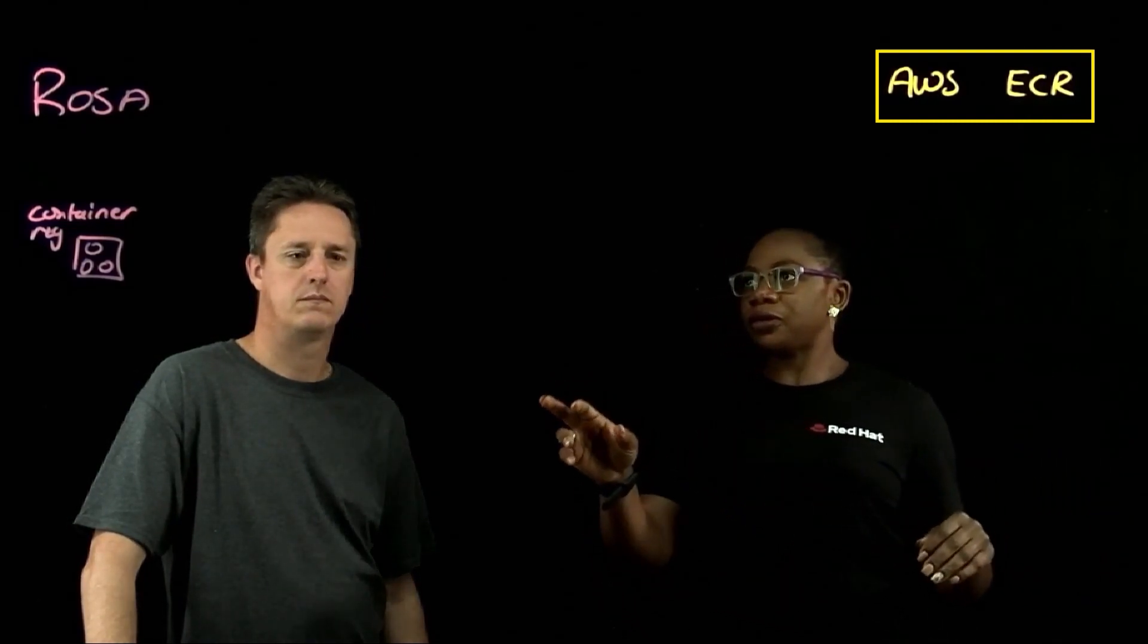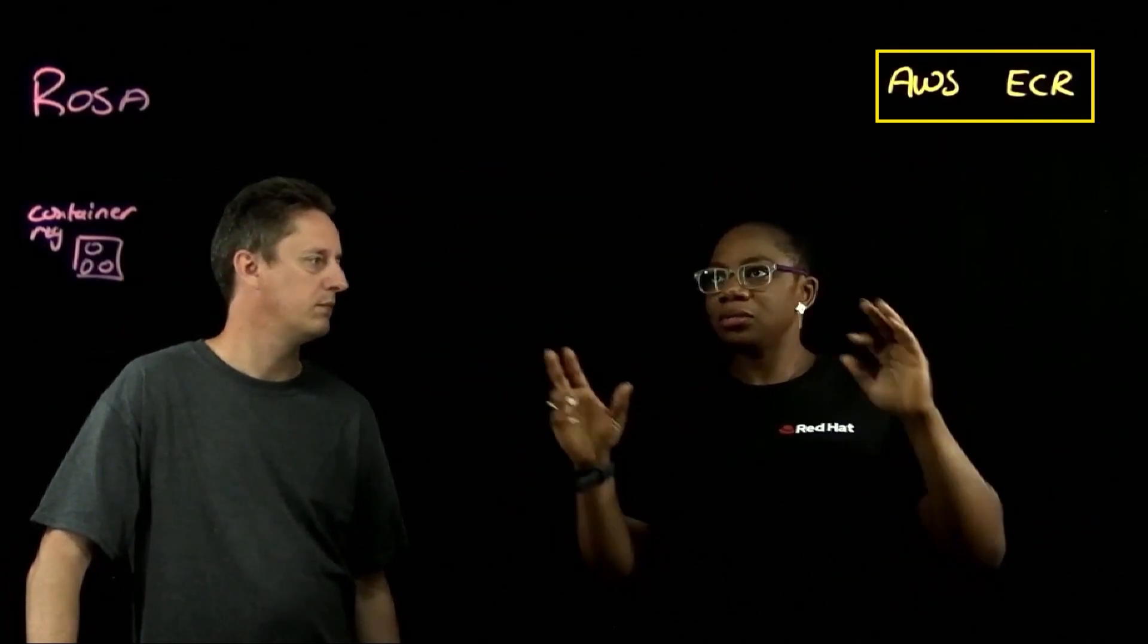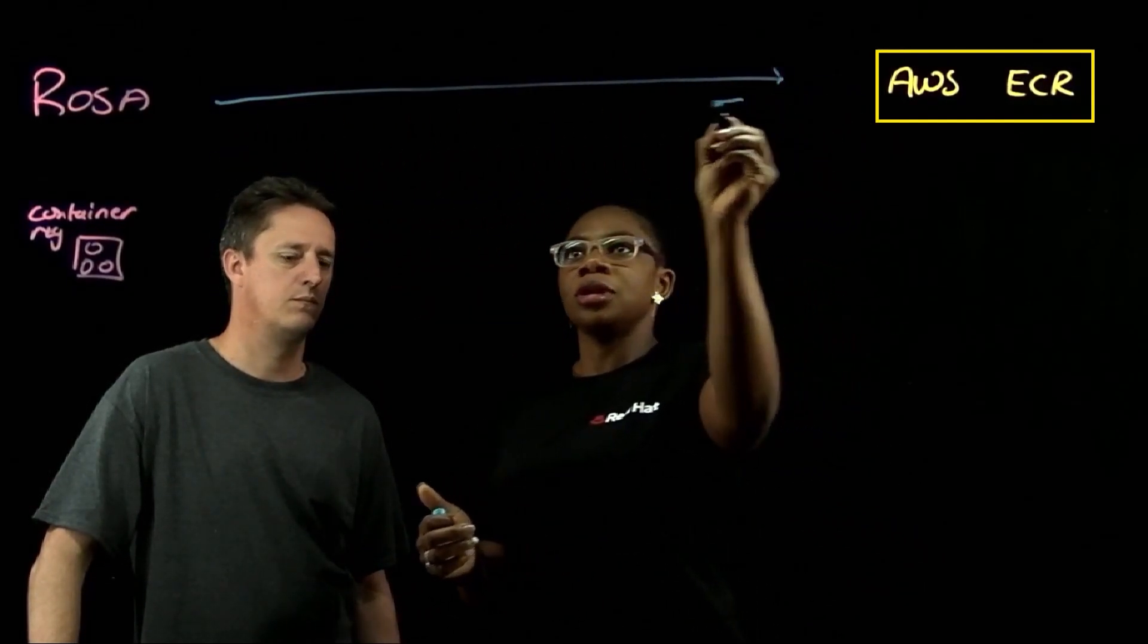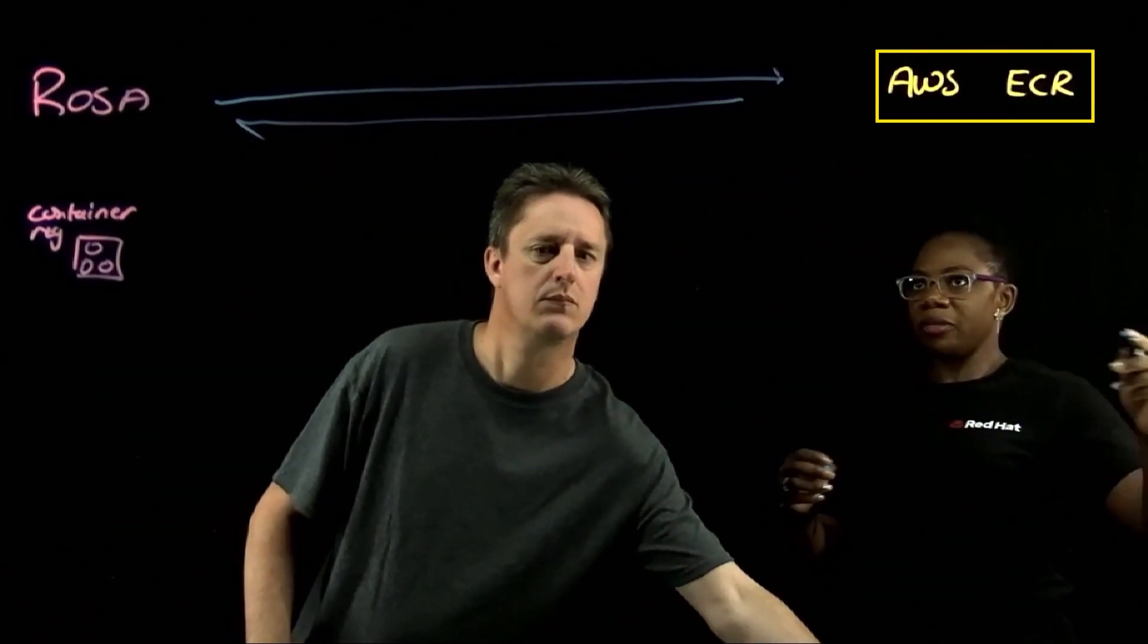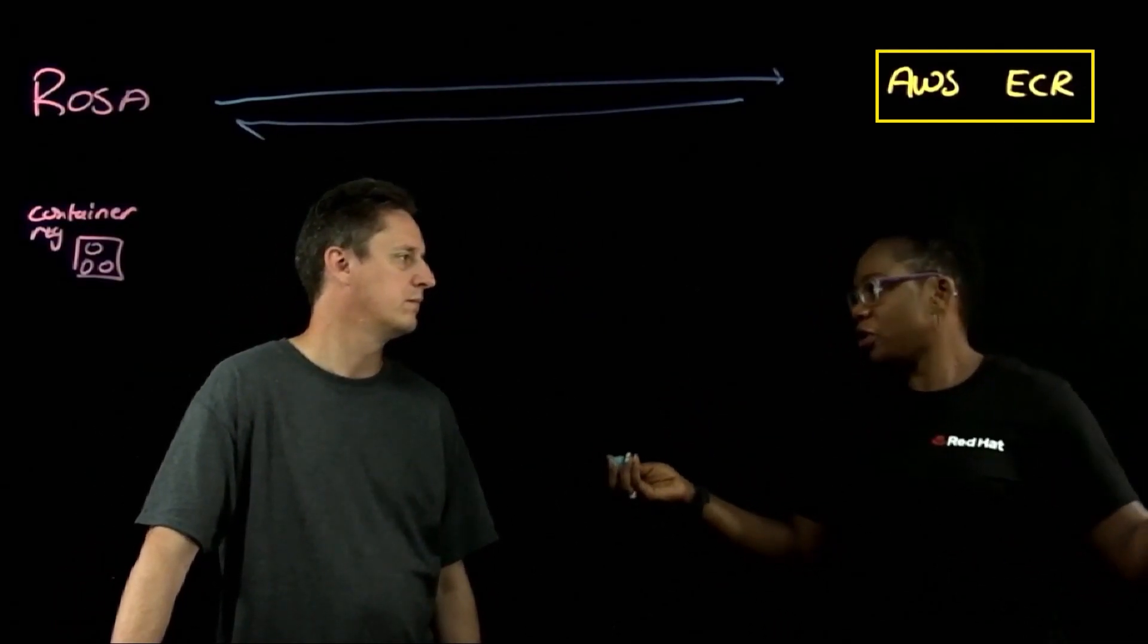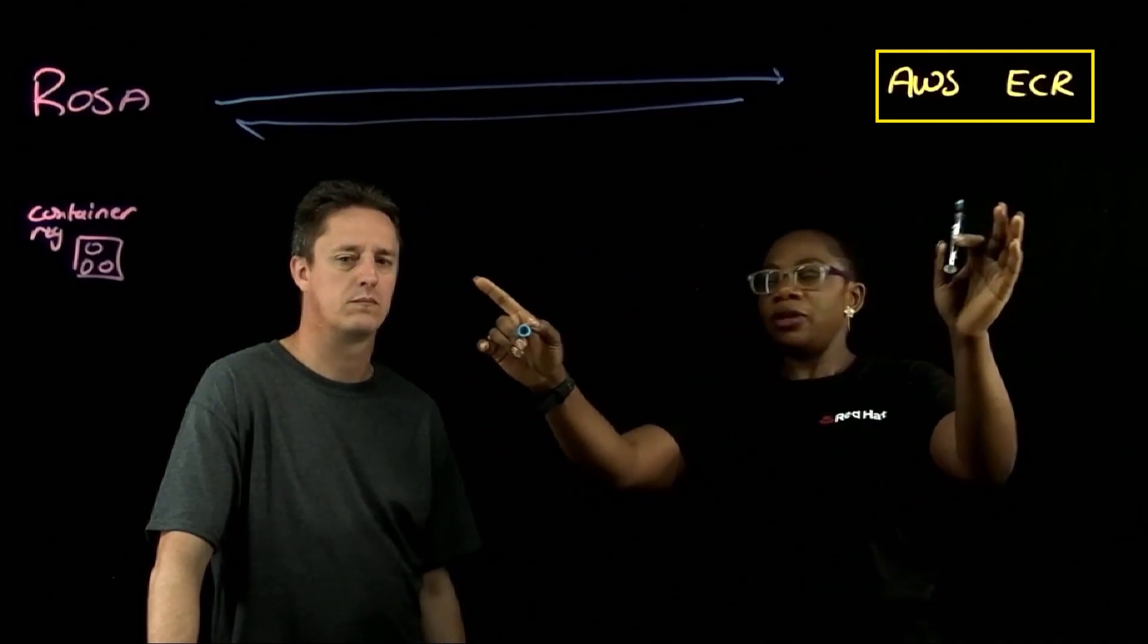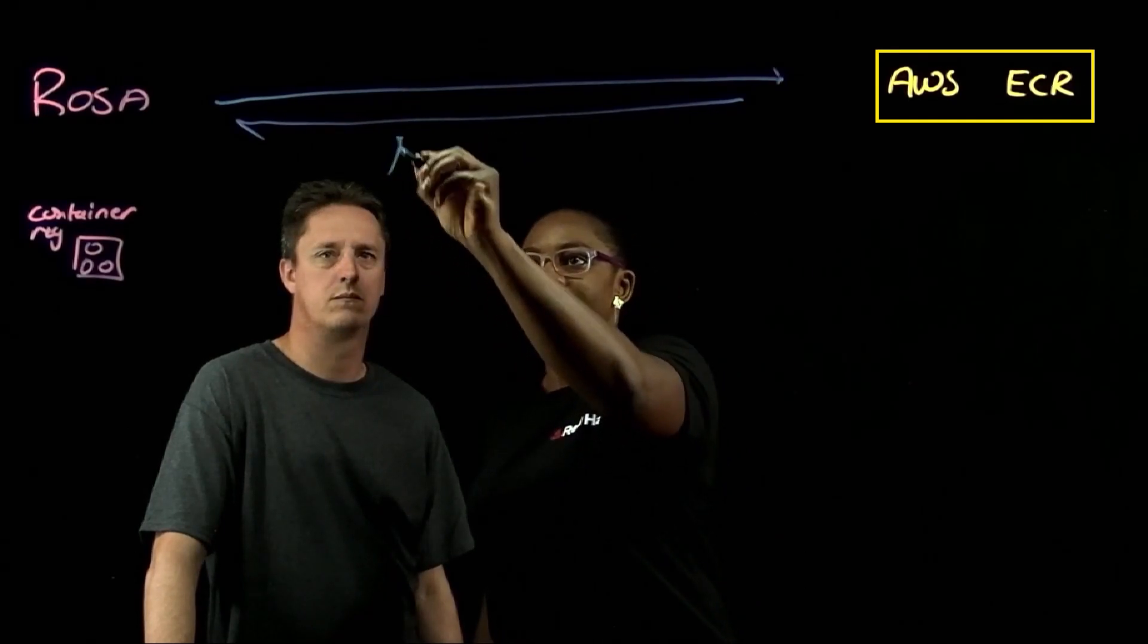So as she said, for you to use ECR with ROSA, you have same process. There's a push and there's a pull. And it's important to note that ECR has the public and private registry, but of course we recommend that you use private for your production grade because you want it to be secure. And in order for you to pull or push, there needs to be an authentication that has to happen and you can make use of AWS IAM.